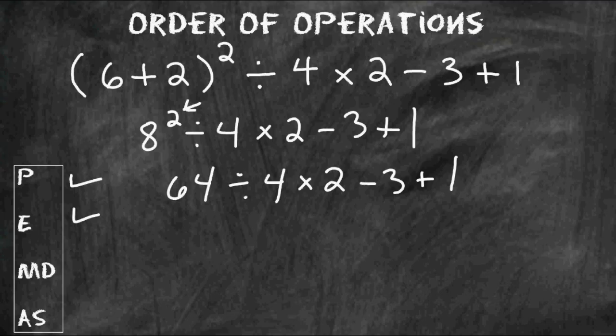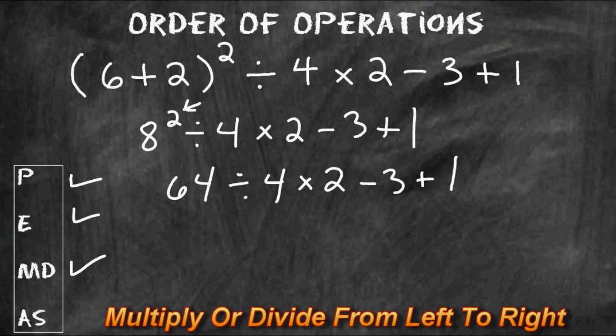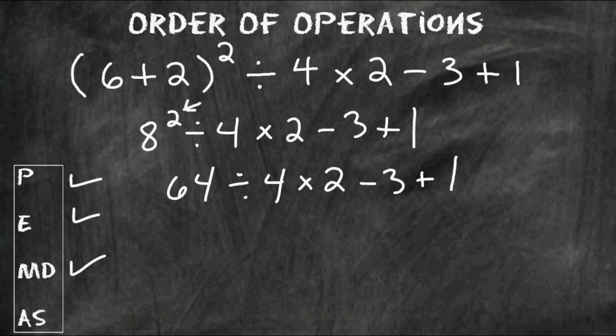After you are finished with everything inside the parentheses and finished with all exponents, you must multiply and divide from left to right. A lot of people mistakenly think that you always multiply before you divide, but this is not true. You look for whichever of the two operations appears first in your math expression from left to right.